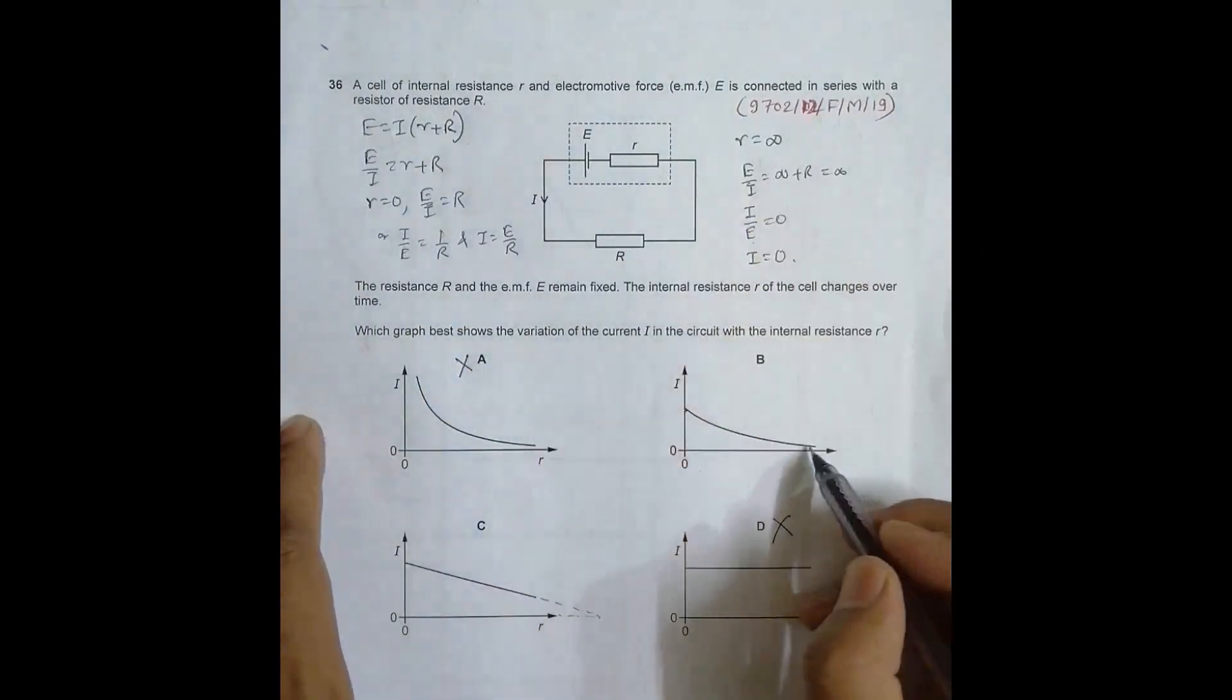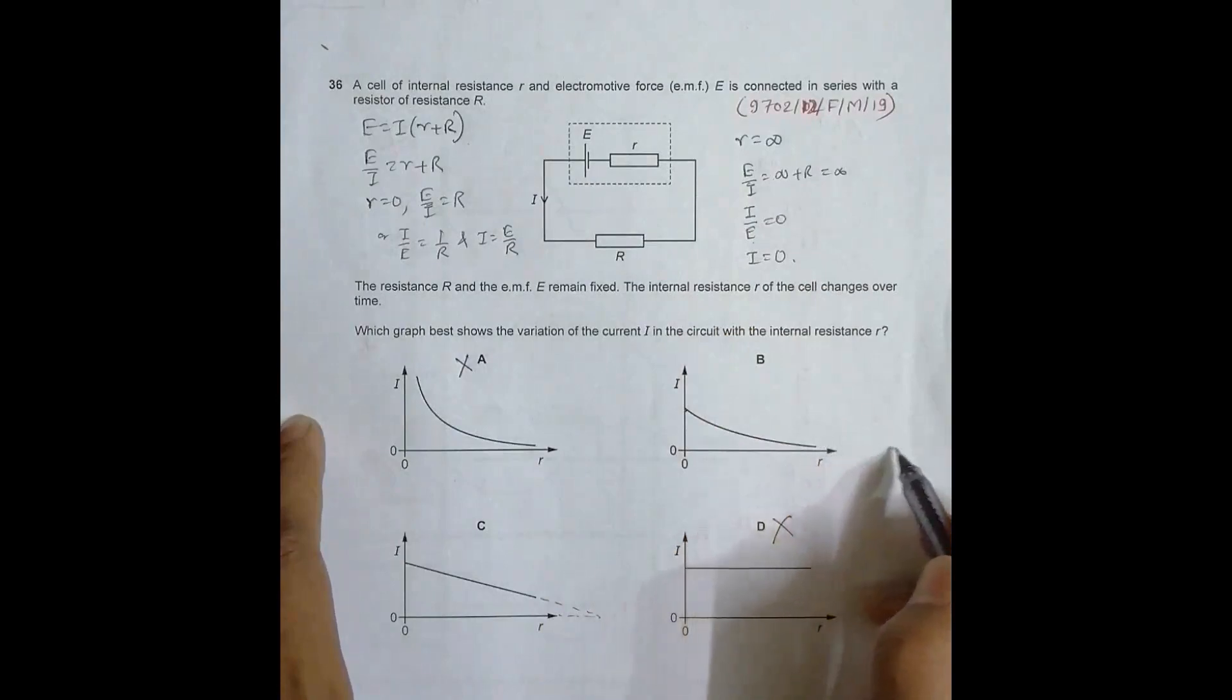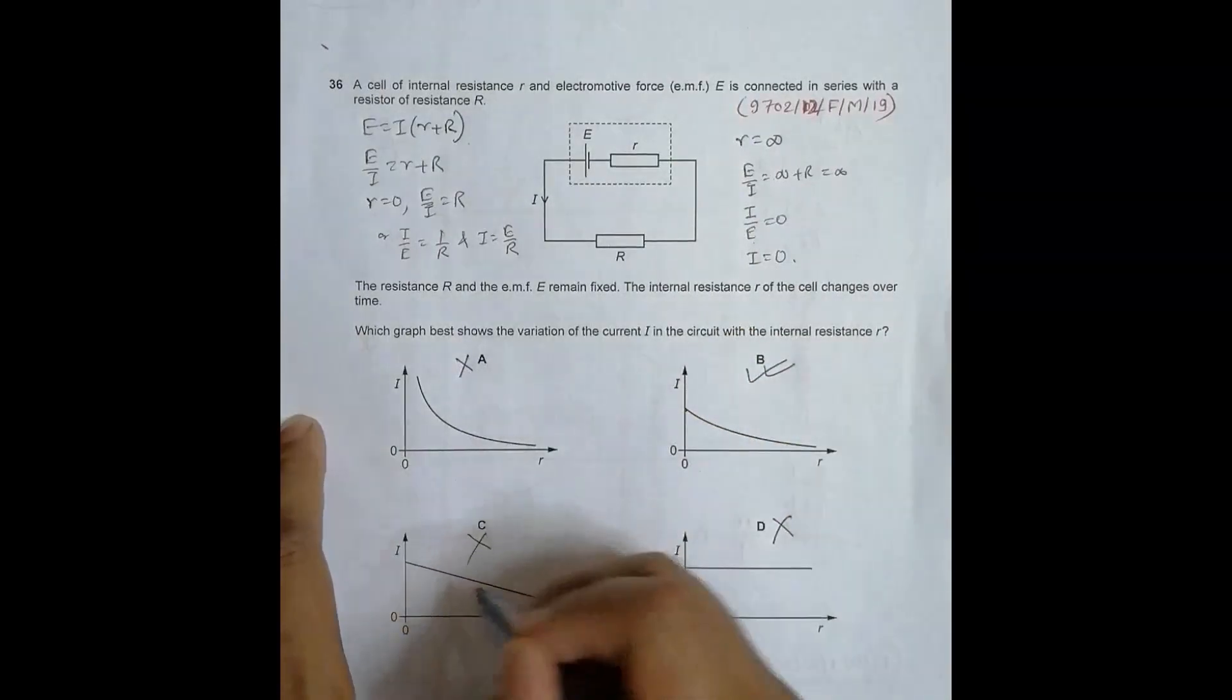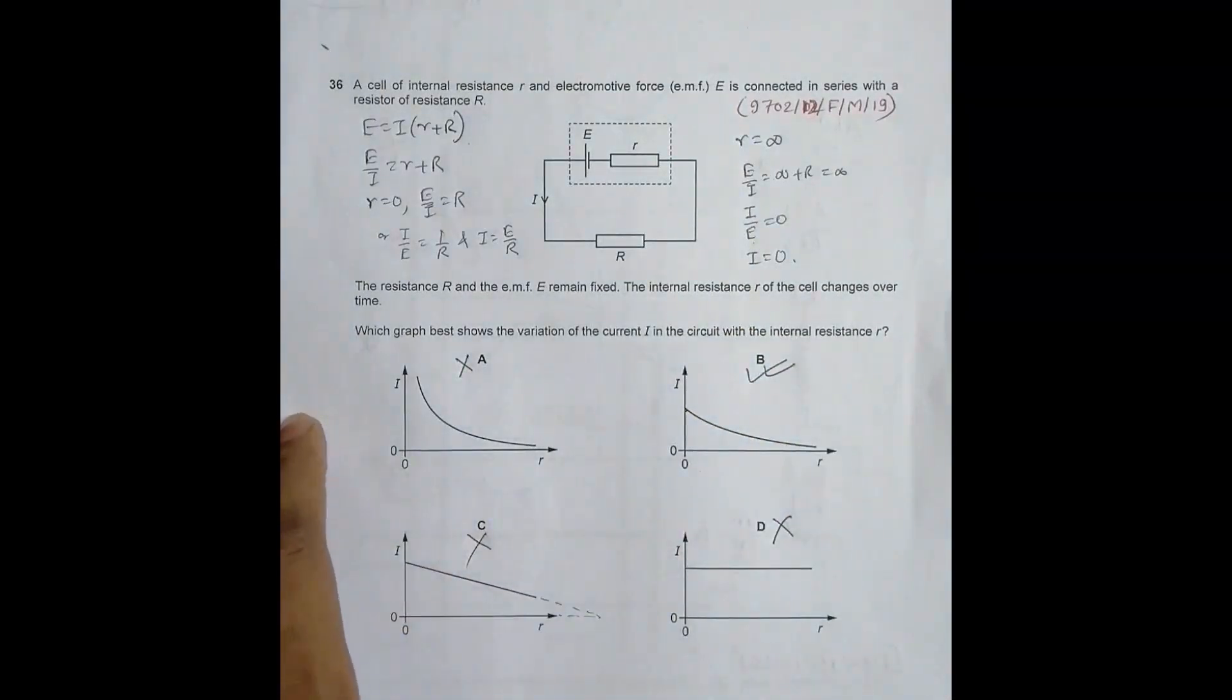So when r equals 0, I has a certain value, and when r equals infinity, I becomes ultimately 0. That's why number B qualifies as the correct answer. Choice number C disqualifies, so the only remaining choice is choice number B.